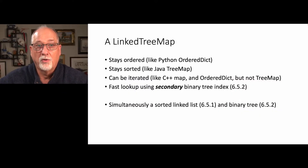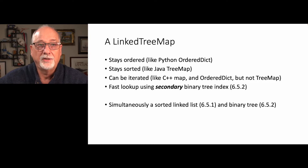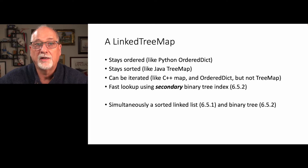Up to now we've done all the easy stuff, so it's time to do the linked tree map, which really is a modern, flexible key-value store — a nice key-value store that you would want to use as a software developer. Our linked tree map is ordered like Python ordered dictionaries; it stays sorted, meaning that not only does it stay in order, it stays in sorted order. We insert things and they go in order, like a Java tree map.